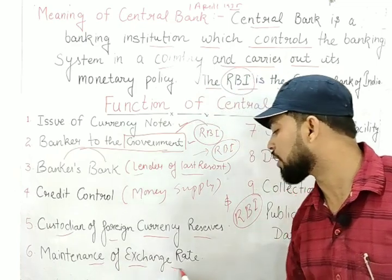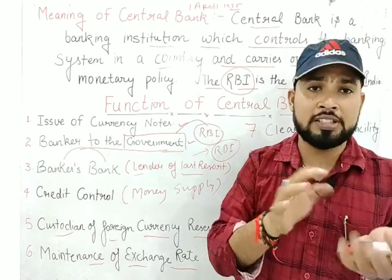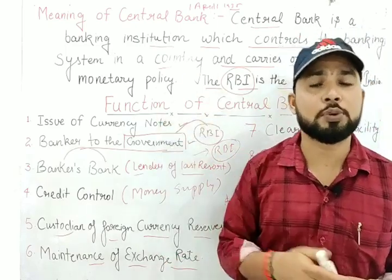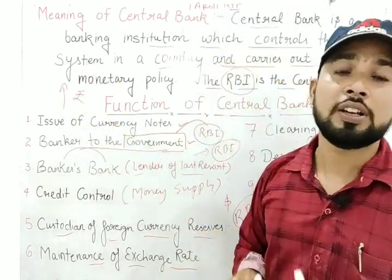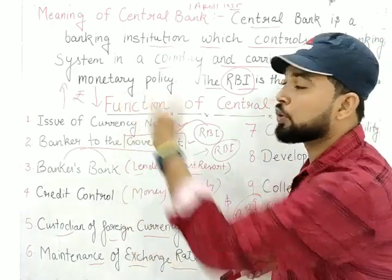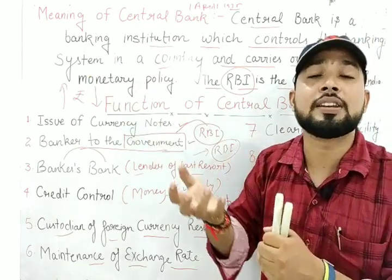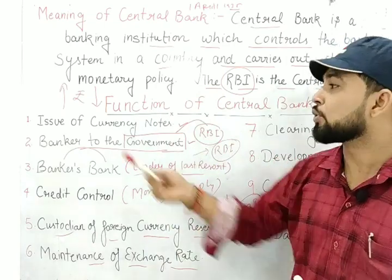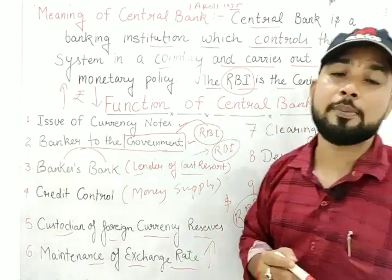The sixth function is maintenance of exchange rate. RBI manages the exchange rate between Indian currency and foreign currencies. When we focus more on exports, the value of Indian currency increases in the international market. When we focus more on imports, the value of Indian currency decreases. RBI controls this by providing loans to the industrial sector to boost production, increase GDP, and promote exports. Maintenance of exchange rate is controlled by the central bank.